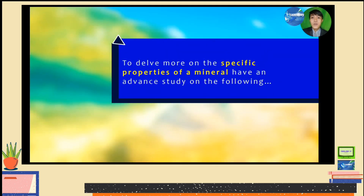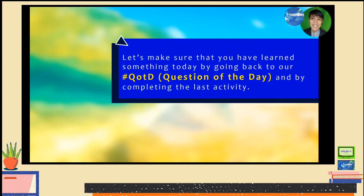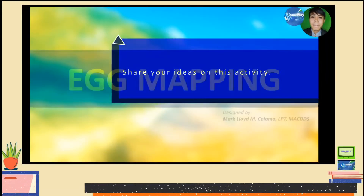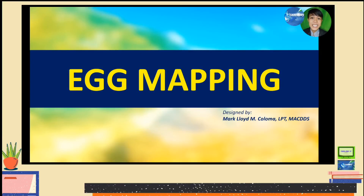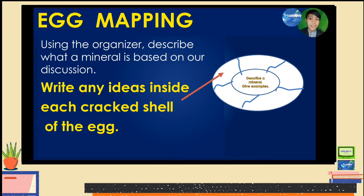To delve more on the specific physical and chemical properties, I want you to research them. You may also research a list of examples of minerals found in your home, and we will try to find out whether they have the basic properties. Let's make sure that you have learned something today by going back to our hashtag UOTD or question of the day: What makes a mineral, mineral? You may share what you have learned on this activity called the Egg Mapping. Using the organizer, you will describe what a mineral is based on our discussion. Write any ideas inside each cracked shell of the egg.